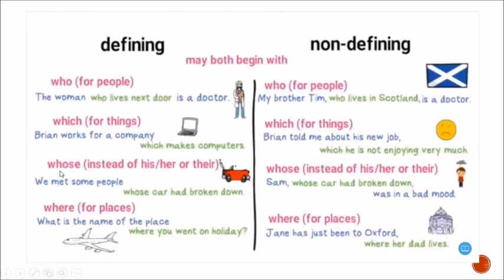'Whose' is used instead of 'his,' 'her,' or 'their' to show possession. Defining example: 'We met some people whose car had broken down' — 'whose car' means 'the car of the people.' Non-defining example: 'Sam, whose car had broken down, was in a bad mood.'